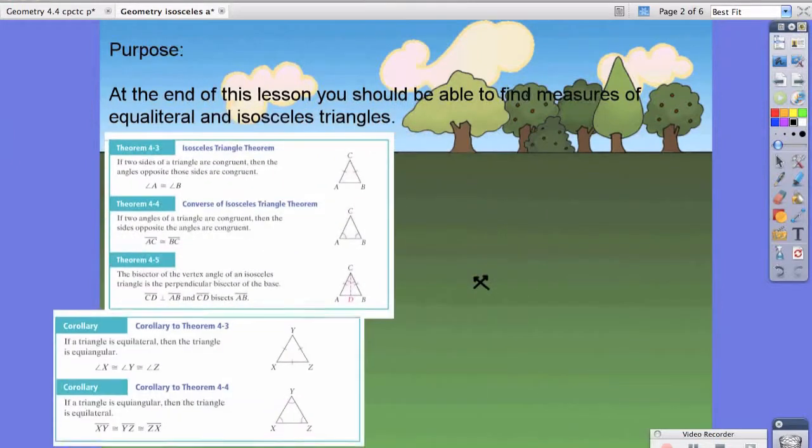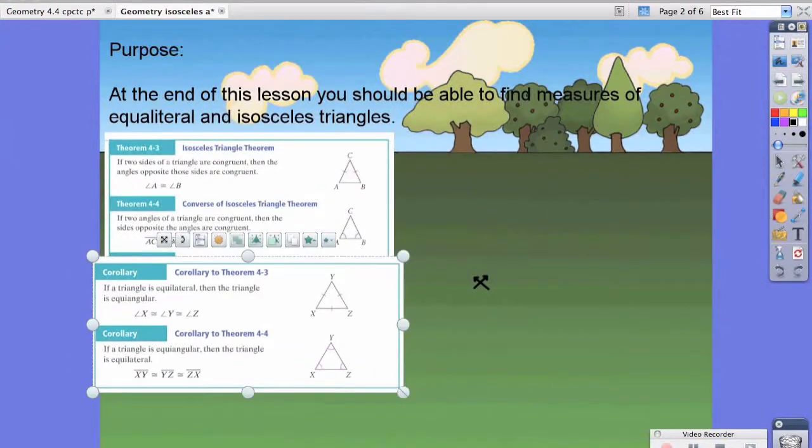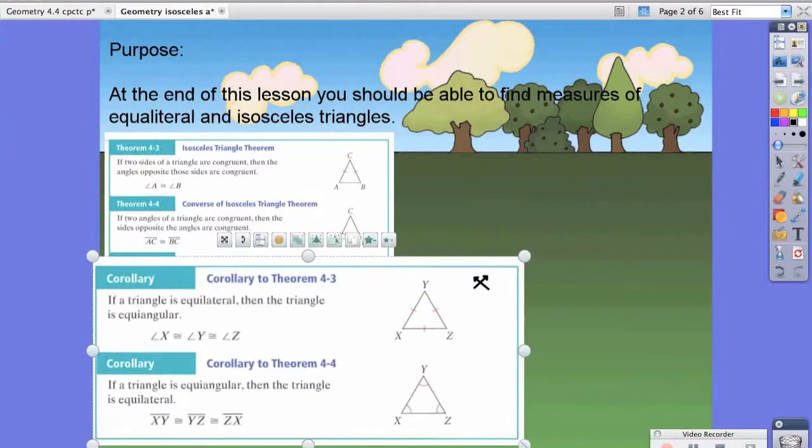So, the next set that we're going to look at are the corollaries. Corollary to theorem 4.3 states that if a triangle is equilateral, then the triangle is also equiangular or has equal angles.